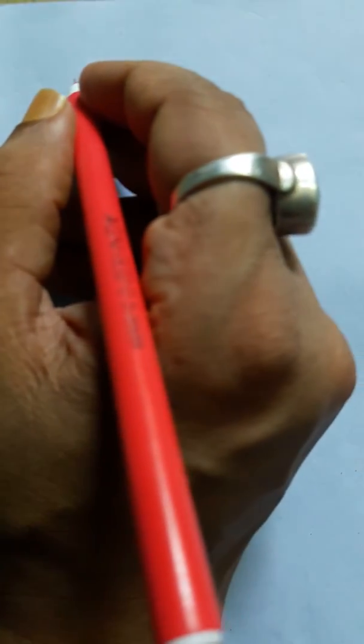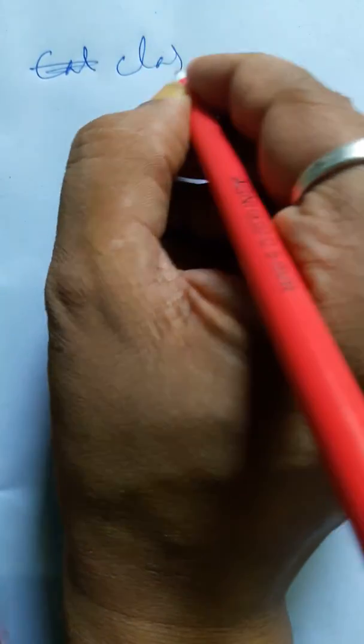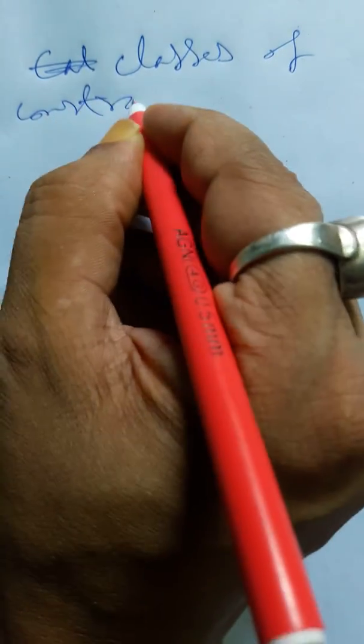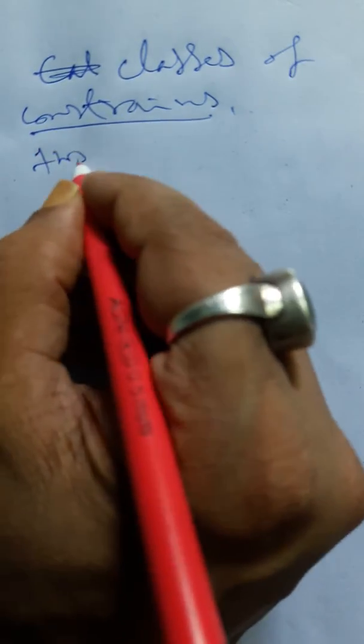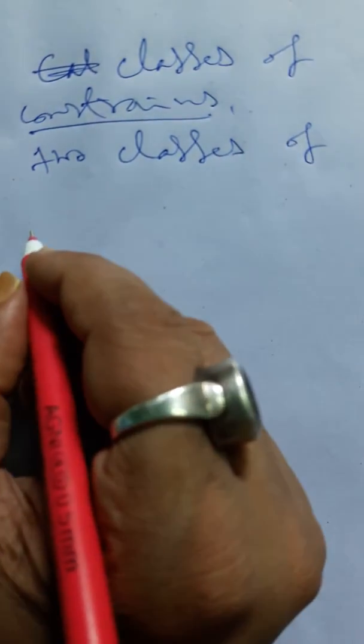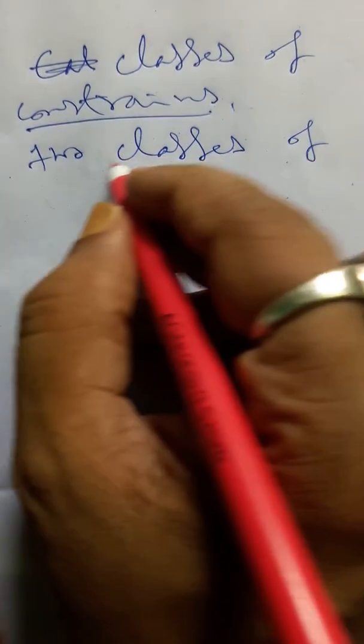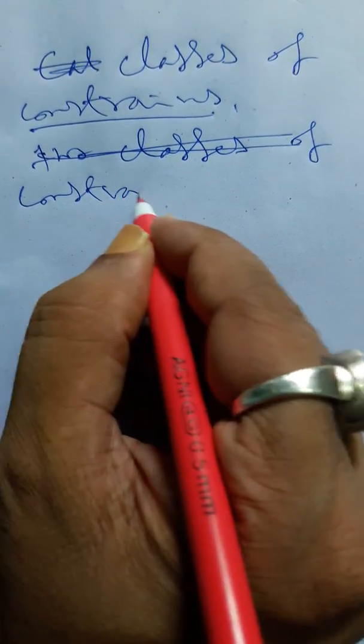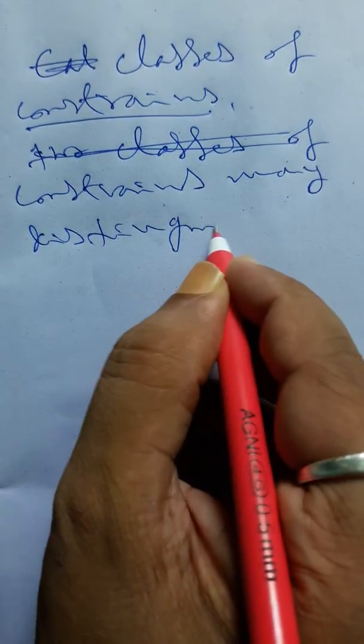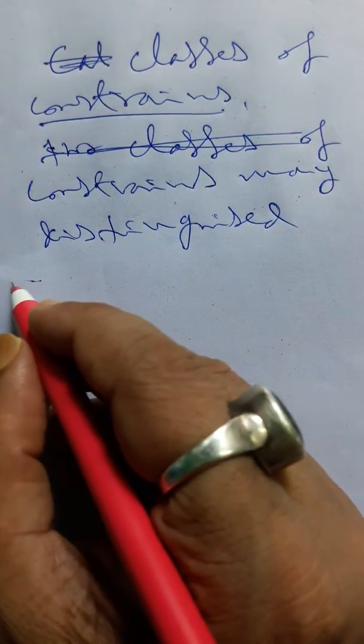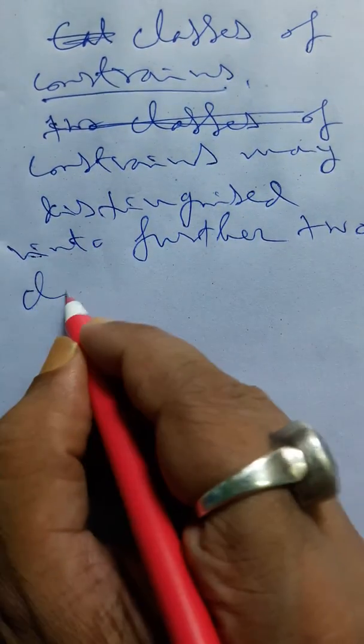Classes of constants. So there are two classes of constants. That means constant may be distinguished into further two classes.